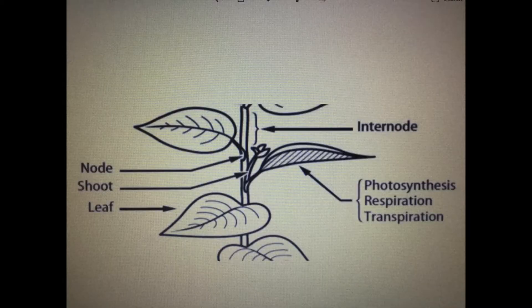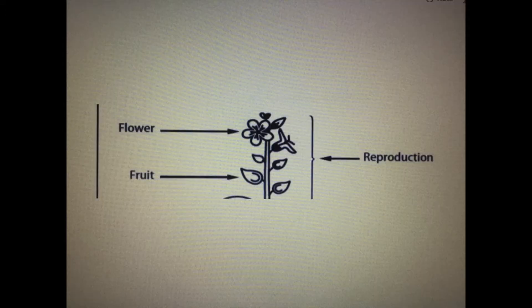The leaves are where the plant breathes, releasing oxygen and absorbing carbon dioxide. The leaves are also where the plant absorbs sunlight to produce the food it needs, and they also store food. The flowers are the reproductive portion of the plant. They're often fragrant and colorful to attract pollinators to help the plant produce fruit and seed.